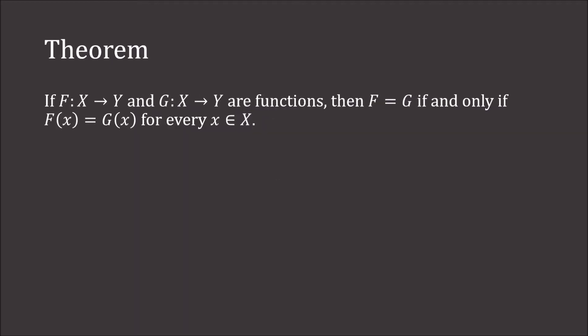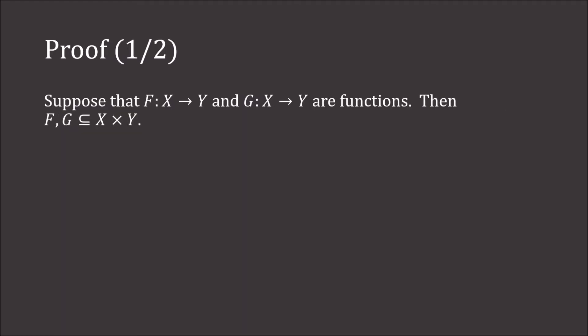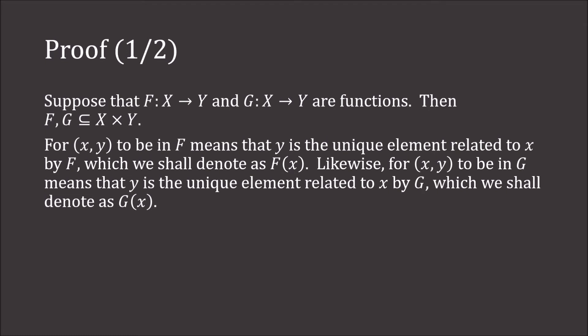Now let's look at some properties of functions. If f from X to Y and g from X to Y are both functions, then f equals g if and only if f(x) equals g(x) for every x in X. Both f and g are subsets of X cross Y. For (x, y) to be in F means y is the unique element related to x by F, denoted f(x), and similarly g(x) for G.